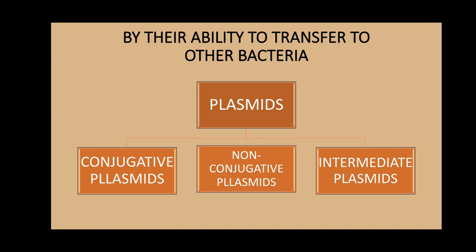By their ability to transfer genetic material to other bacteria, plasmids are classified as follows. Conjugative plasmids contain tra genes for non-sexual transfer of genetic material and perform the complex process of conjugation — the transfer of plasmids to another bacterium. Non-conjugative plasmids are incapable of initiating conjugation and can only be transferred with the assistance of conjugative plasmids. Intermediate plasmids are mobilizable, carrying only a subset of genes required for transfer, and can parasitize a conjugative plasmid, transferring at high frequency only in its presence.